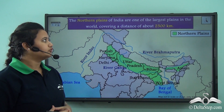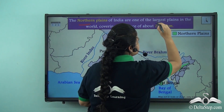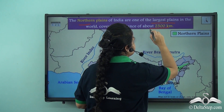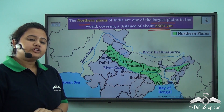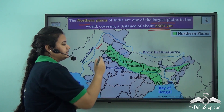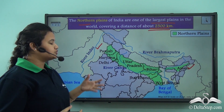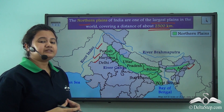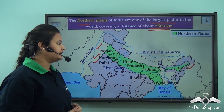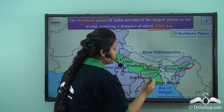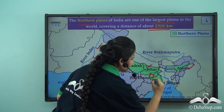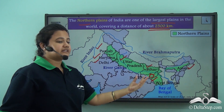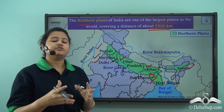The Northern Plains of India are one of the largest plains in the world and they cover an approximate area of 2500 kilometres. The Northern Plains stretch from Punjab in the west to Assam in the east, and in between they also cover other states like Haryana, Delhi — which is not a state but an important Union Territory of India — then Uttar Pradesh, Bihar, a small portion of Jharkhand, West Bengal, and finally Assam in the extreme east.